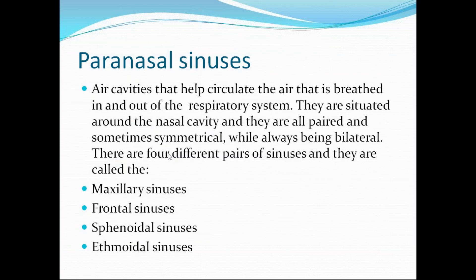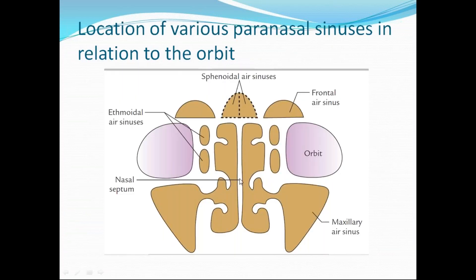Looking at the location around the nasal cavity, you can see the nasal septum and on either side of the nasal cavity the ethmoidal air sinus and maxillary sinus. Below and lateral to the nasal cavity is the maxillary sinus. In relation to the orbit: medial to the orbit is the ethmoidal air sinus, inferior to the orbit is the maxillary air sinus, superior to the orbit is the frontal air sinus, and superomedially is the sphenoidal air sinus in the floor of the middle cranial fossa.